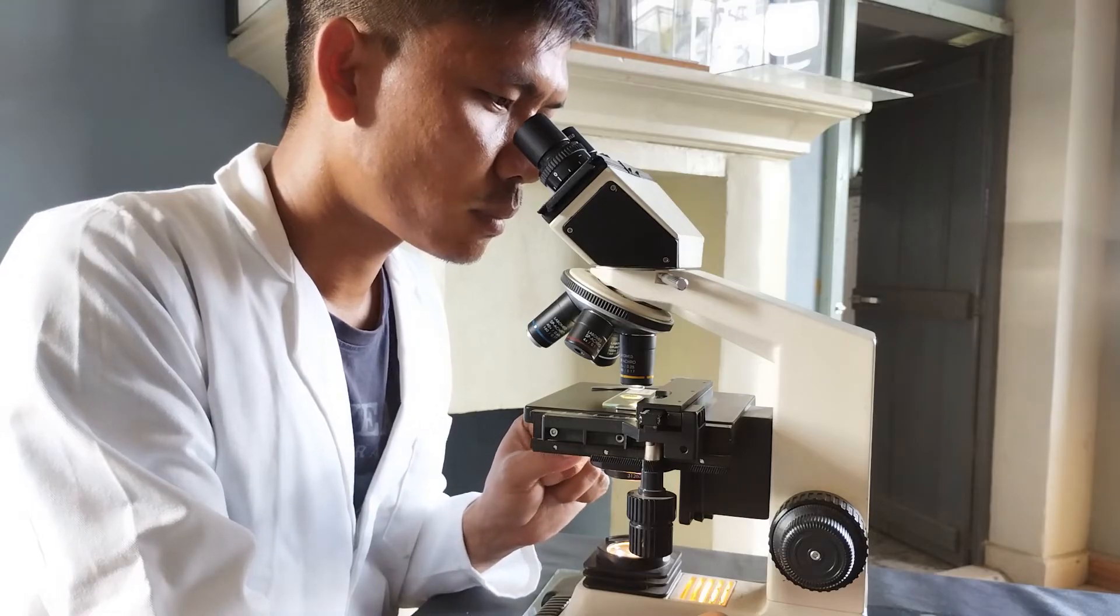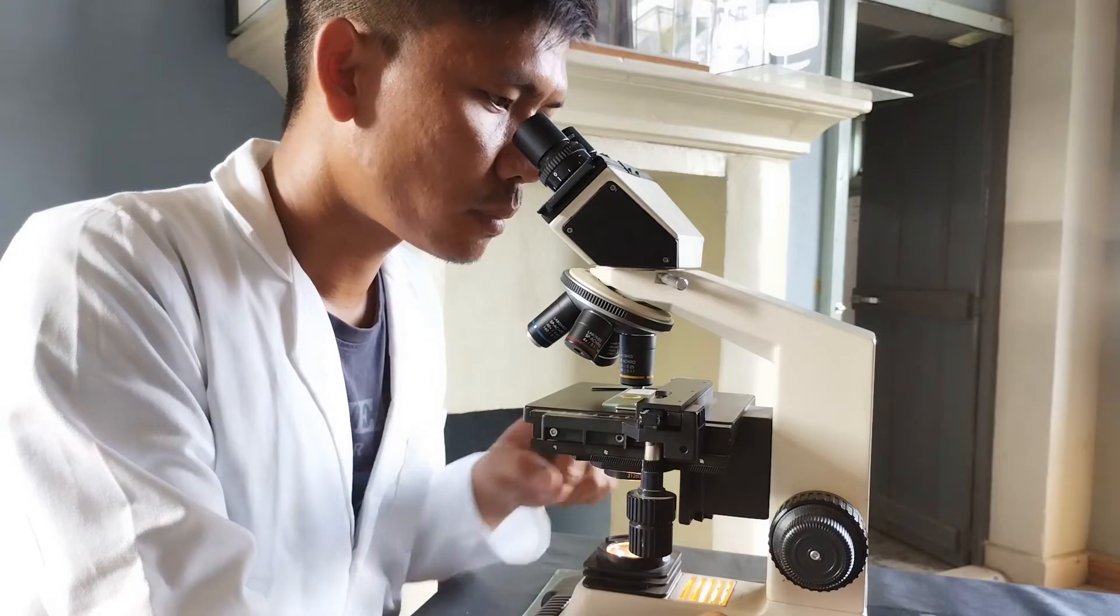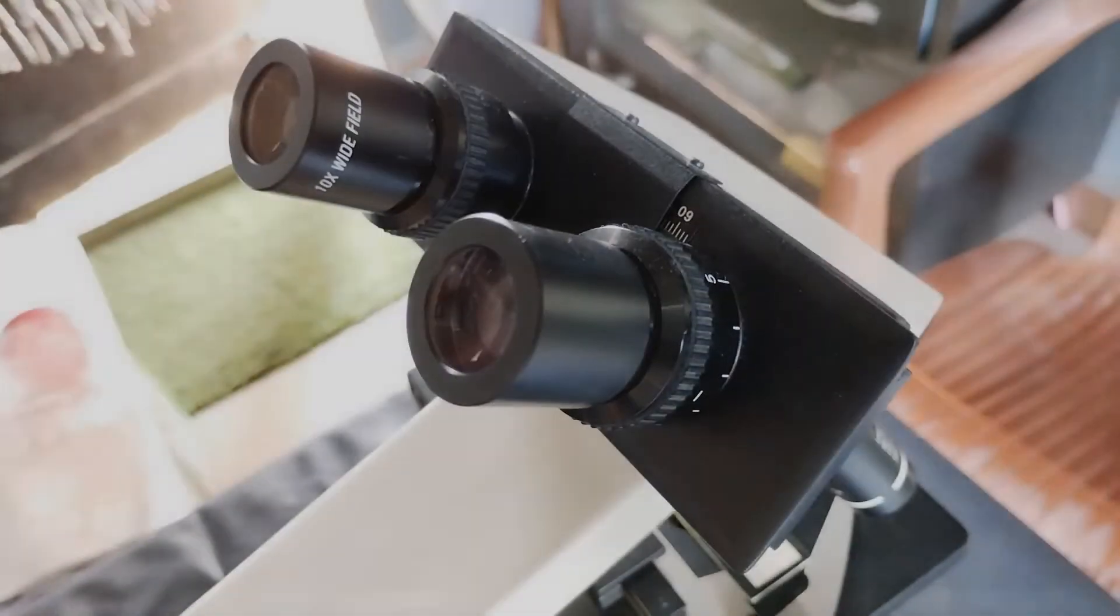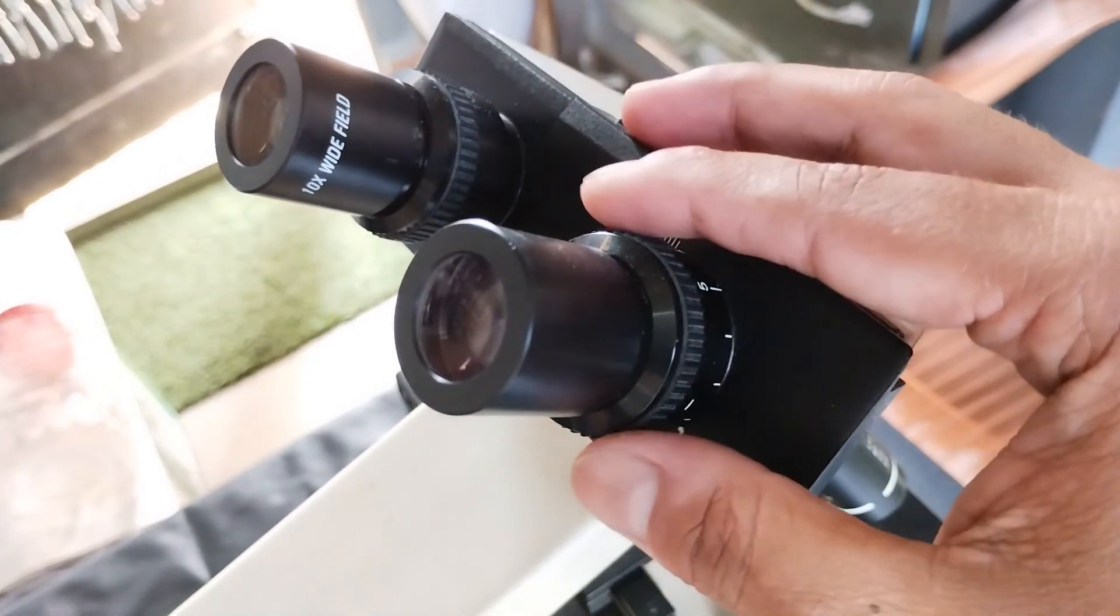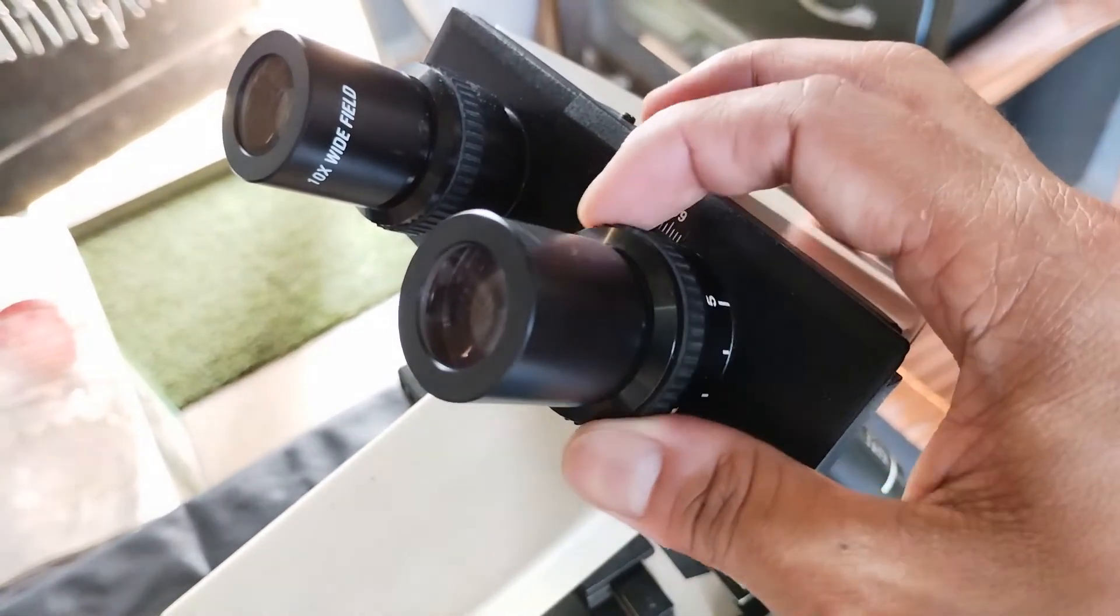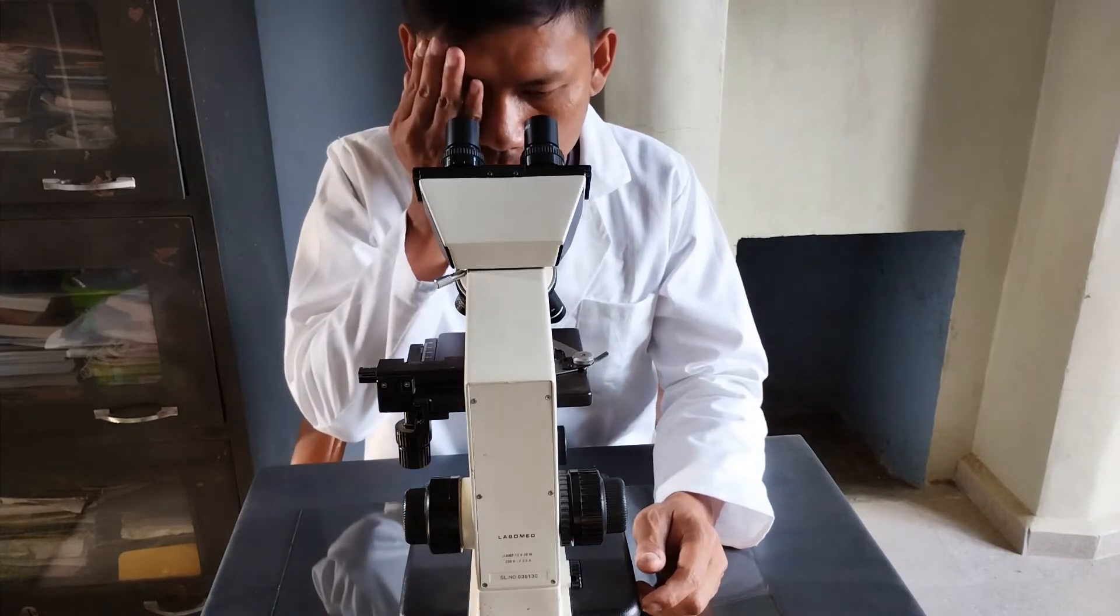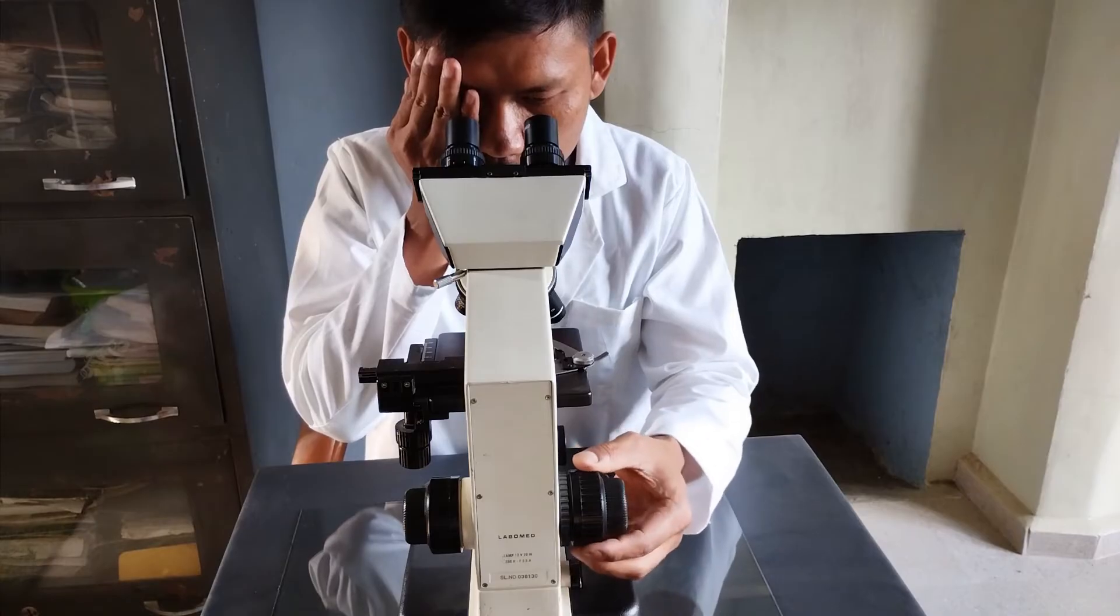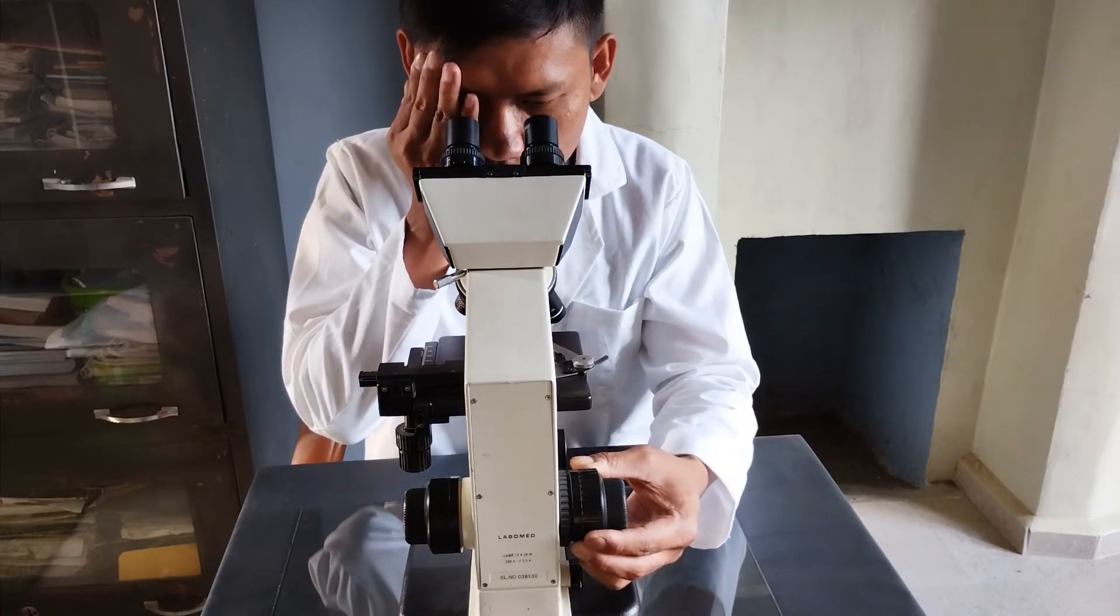Now, before actually beginning to examine the specimen, you'll need to make sure that the focus of both eyepieces are aligned with respect to the powers of both the viewer's eyes. The ocular tube of one of the eyepieces in a binocular microscope, usually the right eyepiece, can be rotated to adjust its focus. To focus align both eyepieces, first cover the right eye and look into the left eyepiece with the left eye.